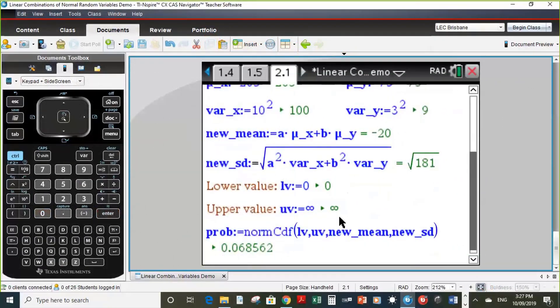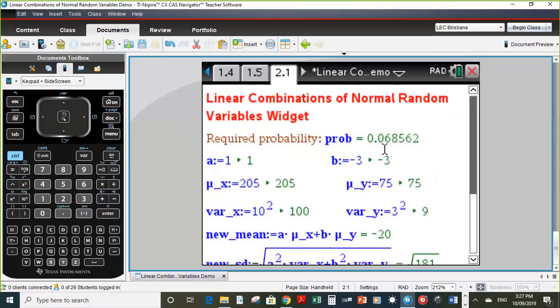So our lower value is 0, our upper value is infinity, and if you're not sure where you find infinity, that would be accessed by pressing the pi button. And it's automatically calculated for us that the probability is, correct to four decimal places, 0.0686. And so that's our answer. So I'm just hoping that you see how beneficial these prepared widgets are, so that when you get a question such as this you've got a widget ready to go and that you can correctly interpret the question, fill out the math boxes remembering to press enter each time, and the solution should appear for you quite efficiently and accurately.